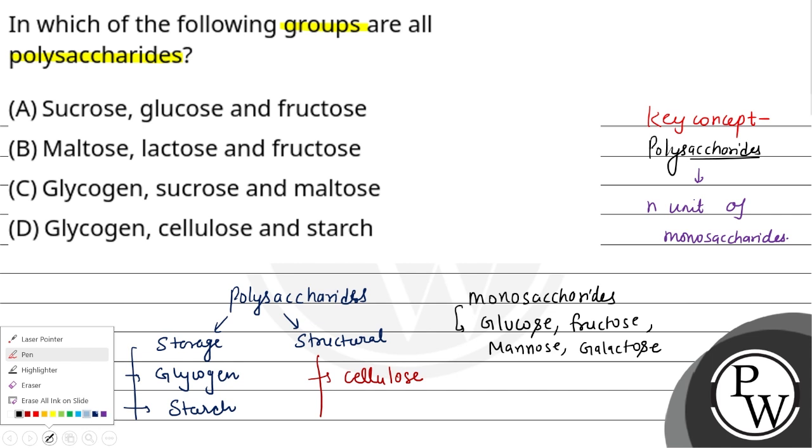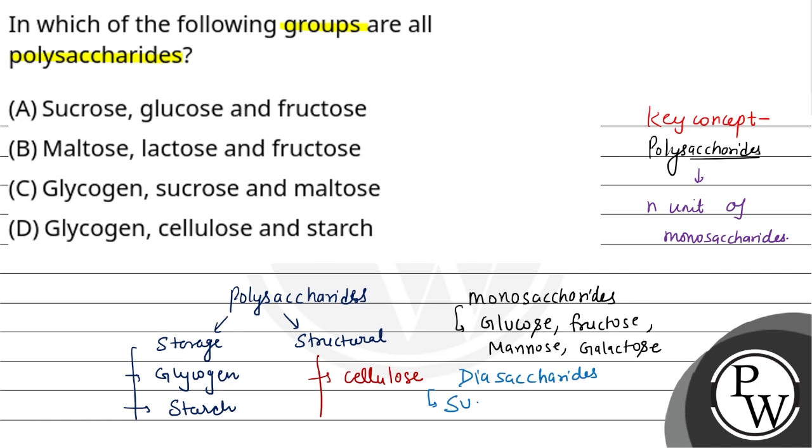If we are talking about disaccharides units, disaccharides are formed by two monosaccharides units. And disaccharides include sucrose, maltose, lactose. These are the disaccharides.